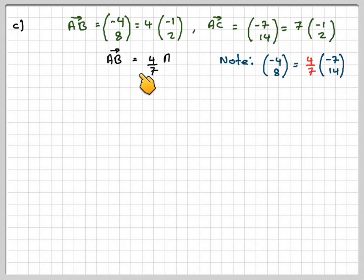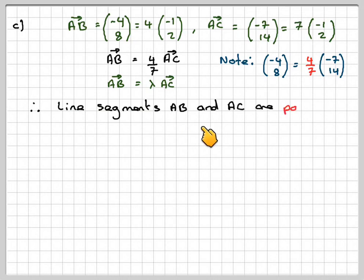Which means that AB is 4/7 of AC. That means that AB is some multiple of AC. And if we've got this, this is true, these two vectors are parallel. So we can say that the line segments AB and AC are parallel. But we also notice that point A is in both vectors.